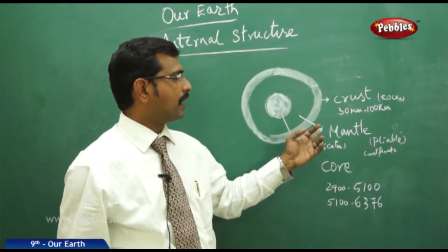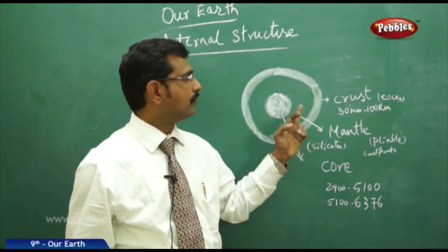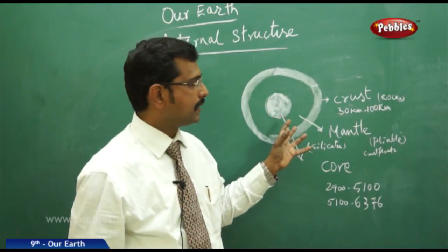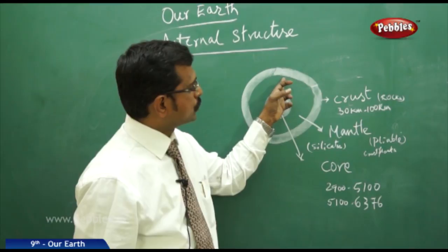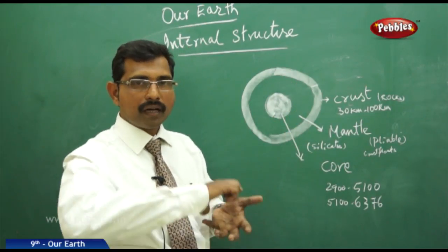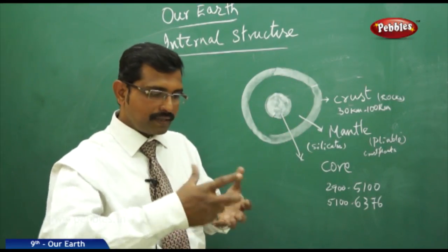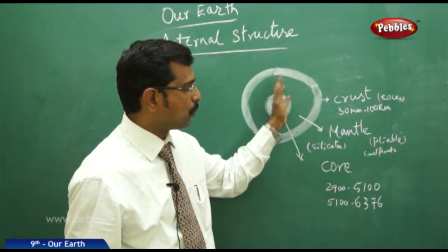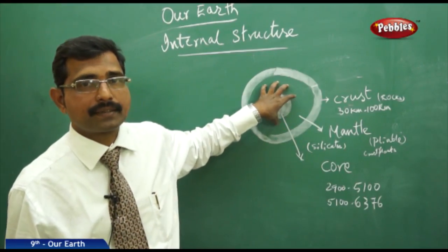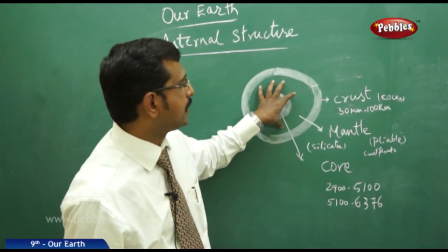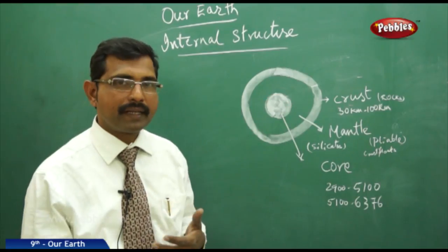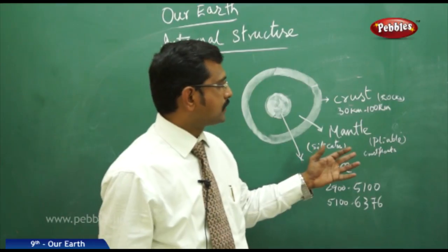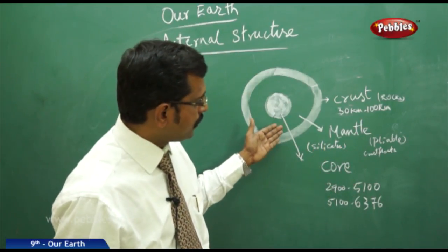The mantle is the middle part and second layer of our earth. Its top layer is pliable, where the earth's crust is moving and floats. This is composed of silicates — a rocky material which is in the molten condition, not in the form of solid.